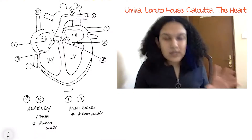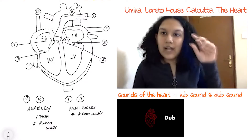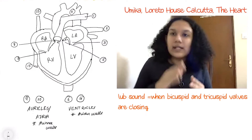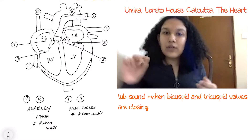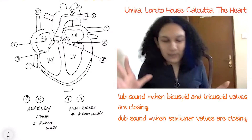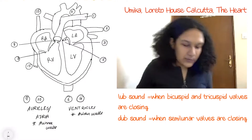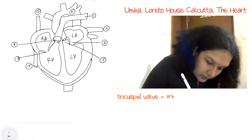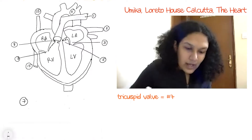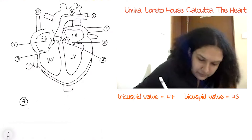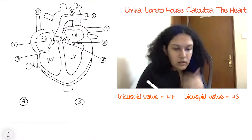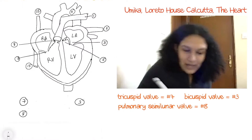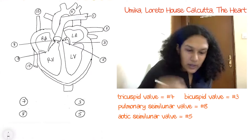Now let's talk about the sounds made in the heart — the lub sound and the dub sound. The lub sound takes place when the tricuspid and bicuspid valves are closing, whereas the dub sound takes place when the semilunar valves are closing. Let me point out the valves on the diagram: the tricuspid valve is labeling seven, the bicuspid valve is number three, the pulmonary semilunar valve is number eight, and the aortic semilunar valve is number five.